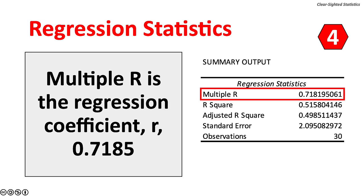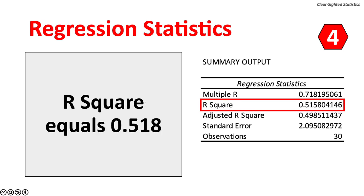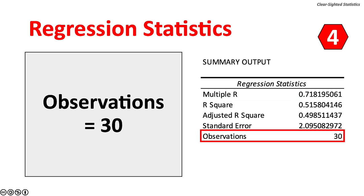Step 4: interpret the results. Multiple R is the coefficient of correlation — R equals 0.7185 (ignore the word 'multiple,' which is for multiple regression). R-square is the coefficient of determination, equaling 0.5158. Observations is the number of matched pairs, equaling 30.